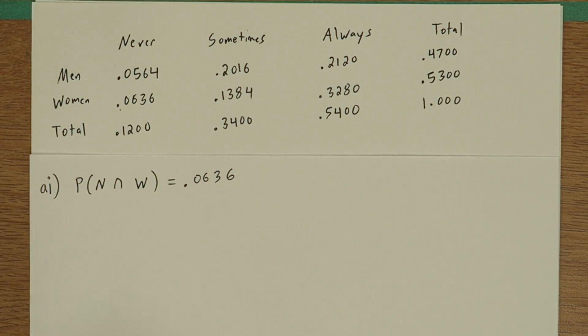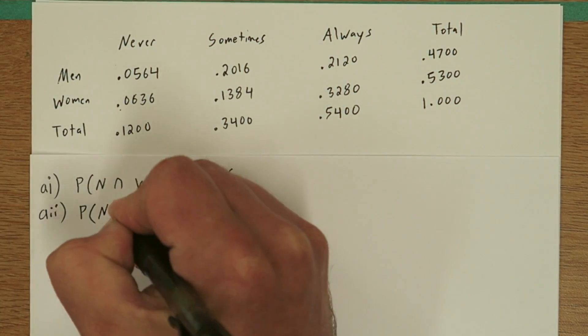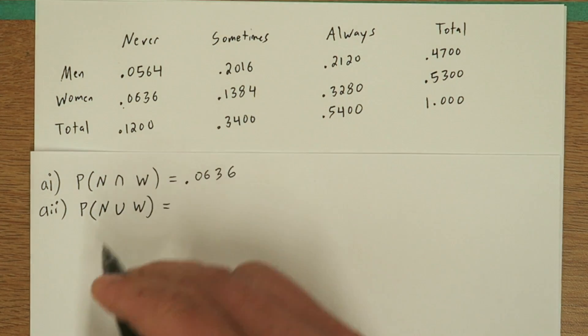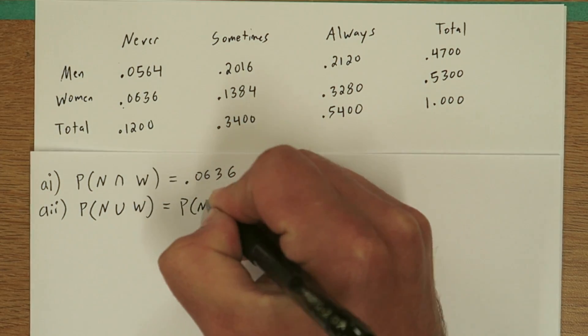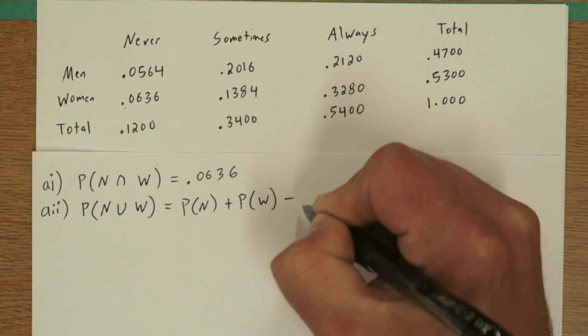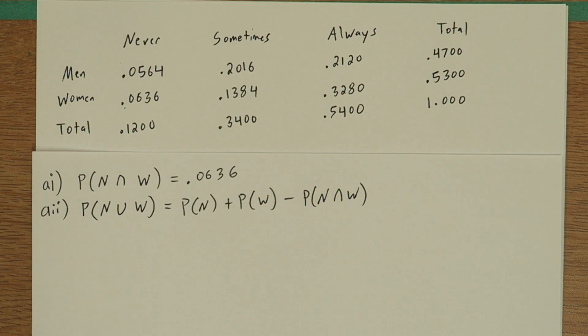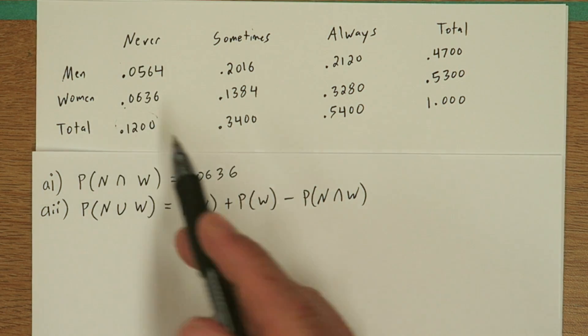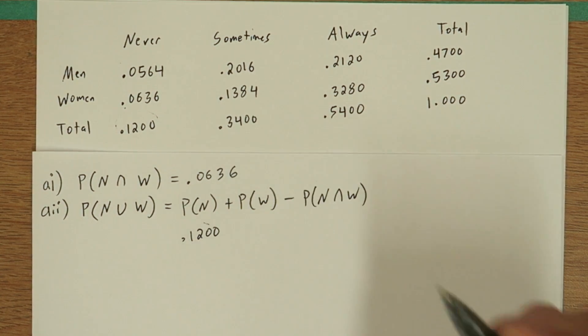The second probability is the probability of never taking your prescribed medication or being a woman. On the formula sheet provided is the formula for or probabilities. So the probability of never or woman equals the probability of never plus probability of woman minus probability of never and woman, which is the probability we found right there in the first part. Let's find the probability of never. If we just go right down to the bottom of the never column, the total is .1200.